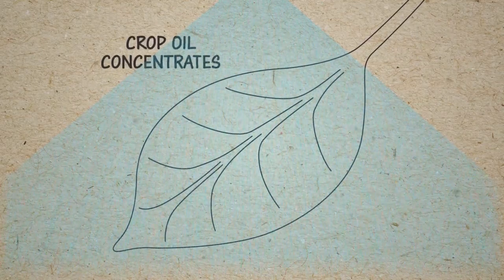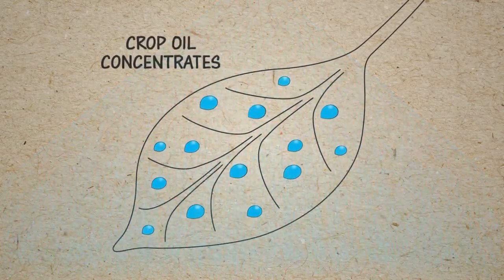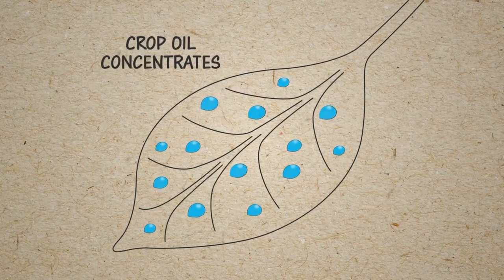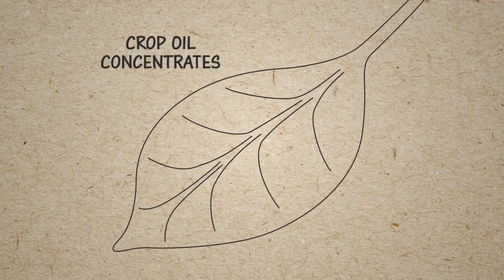Crop oil concentrates, or COCs, are petroleum-based and are used for sticking the spray solution to the leaf surface. They're not good spreaders or penetrants.